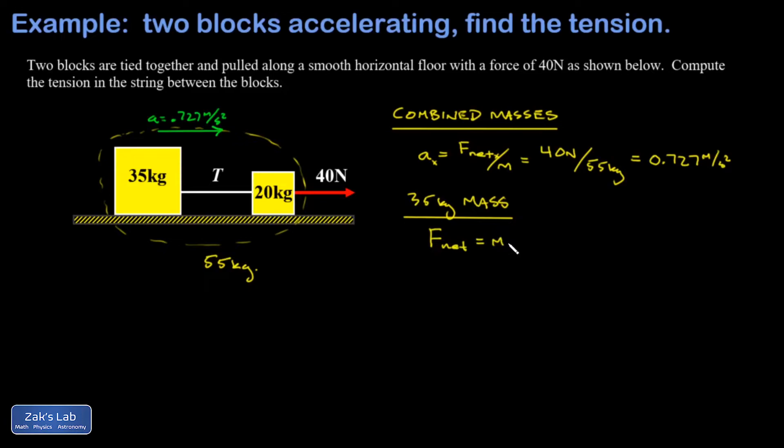I have F net equals ma. The net horizontal force on it is just caused by that one interaction with the rope—the tension pulling to the right. So I have F net equals 35 kilograms times 0.727 meters per second squared.